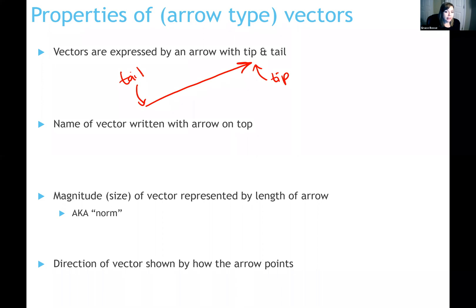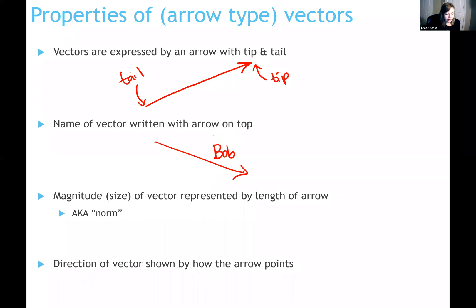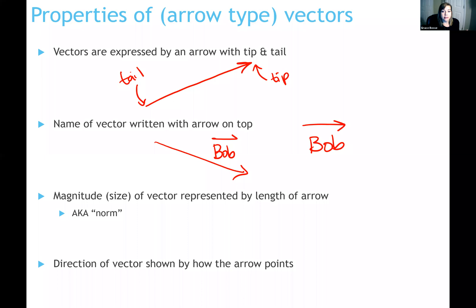You always want to name your vectors and give them a special symbol to emphasize that this is a vector quantity. Let's say I have a vector pointing down and to the right - I'll name this one Bob. To emphasize that Bob is a vector, you put an arrow on top of Bob. It's convention to just draw the top part of the arrow as a shorthand. That denotes that the name Bob is describing a vector quantity. Always name your vectors, draw that name next to the arrow, and put a symbol on top to show that this is a vector.